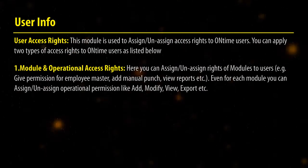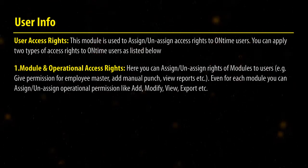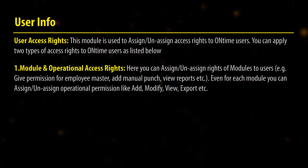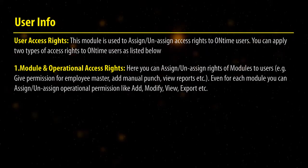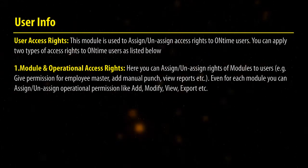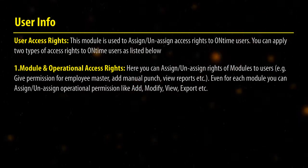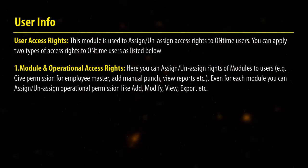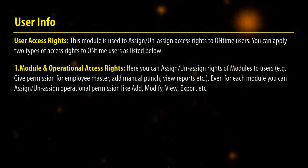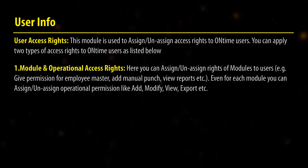Module and Operational Access Rights: Here you can assign or unassign rights of modules to users — for example, give permission for employee masters, add manual punches, view reports, etc. Even for each module, you can assign or unassign operational permissions like add, modify, view, export, etc.